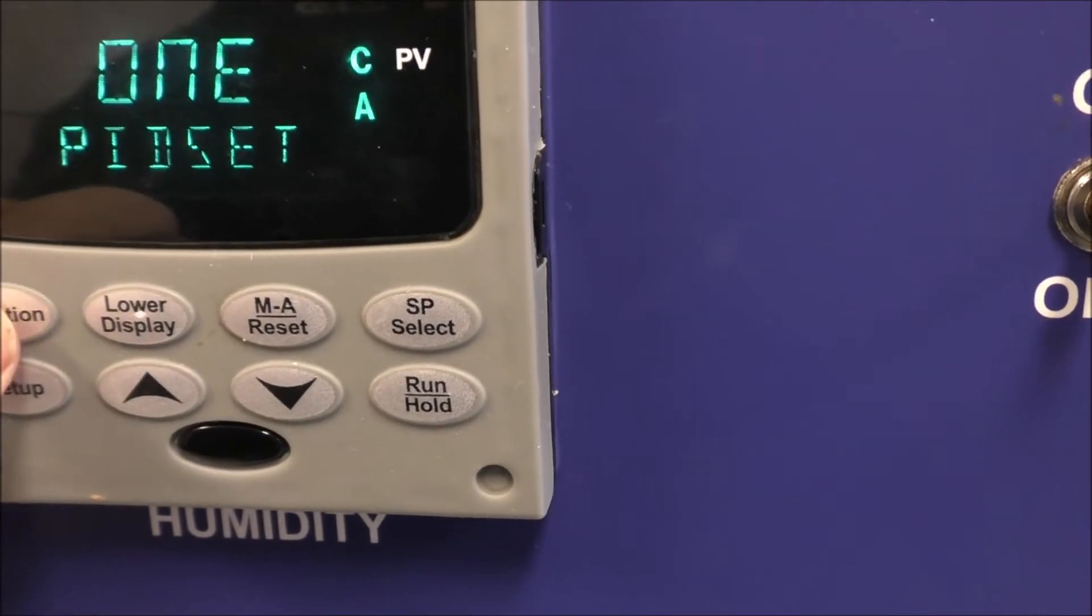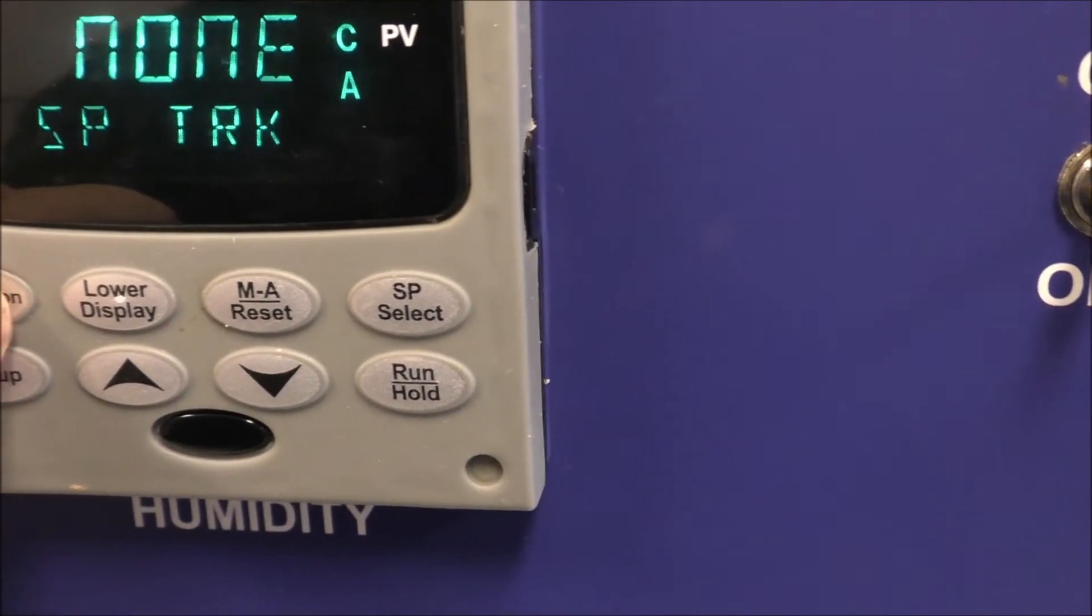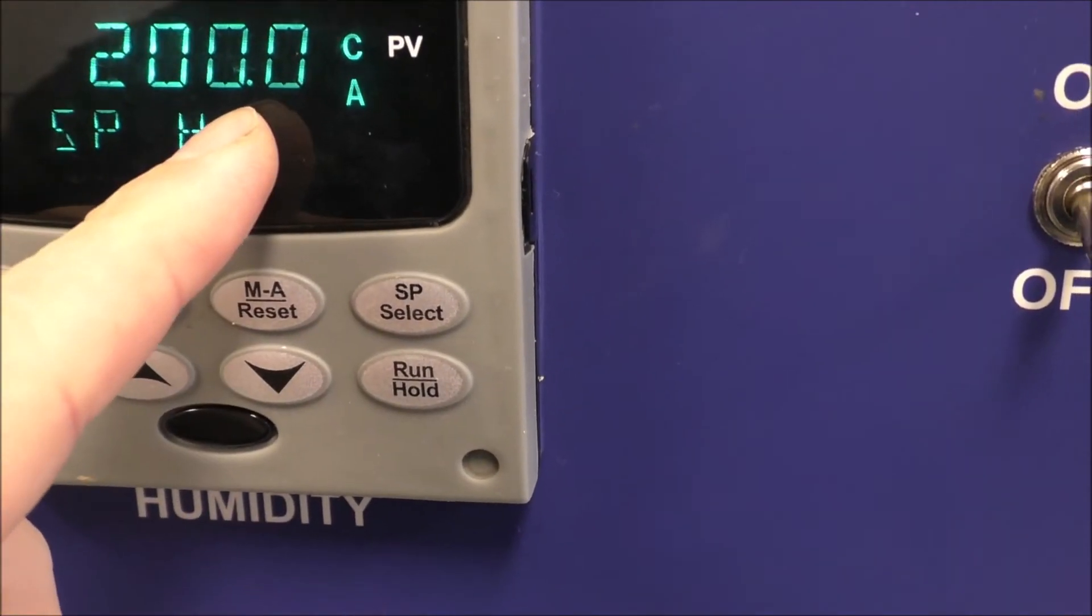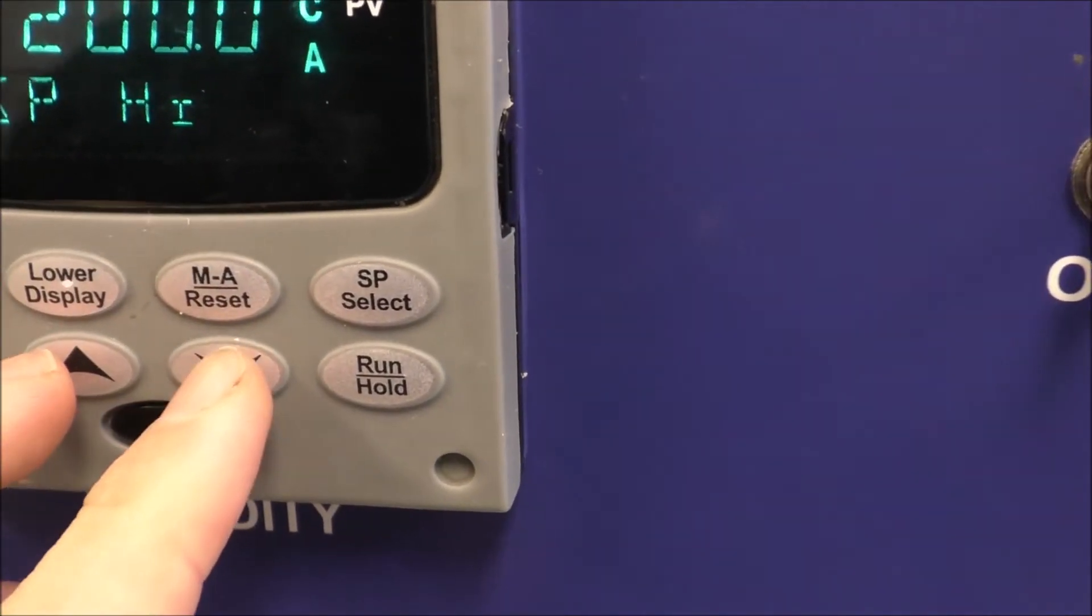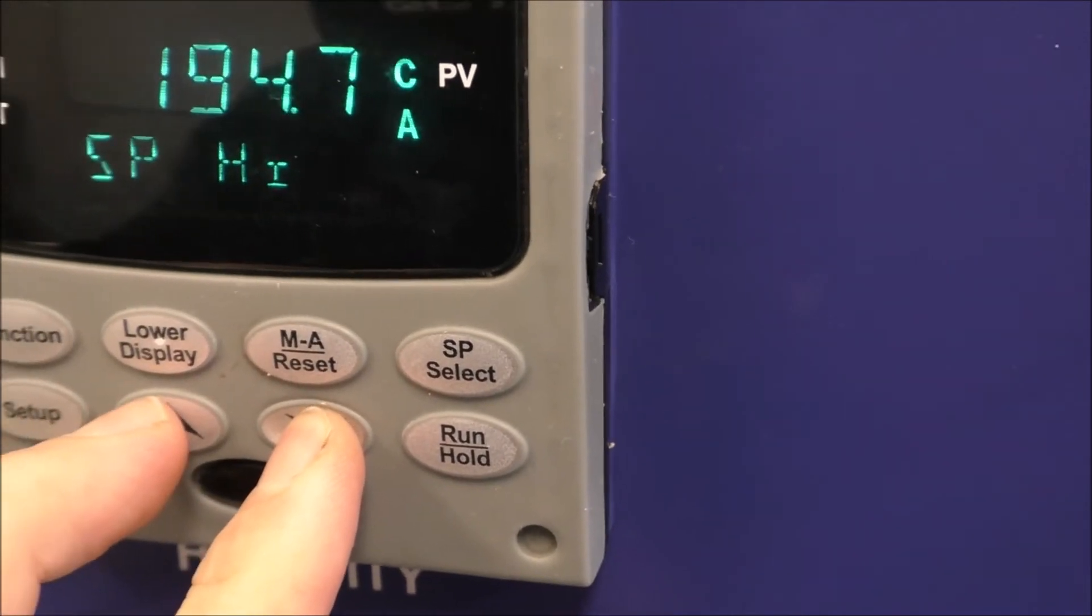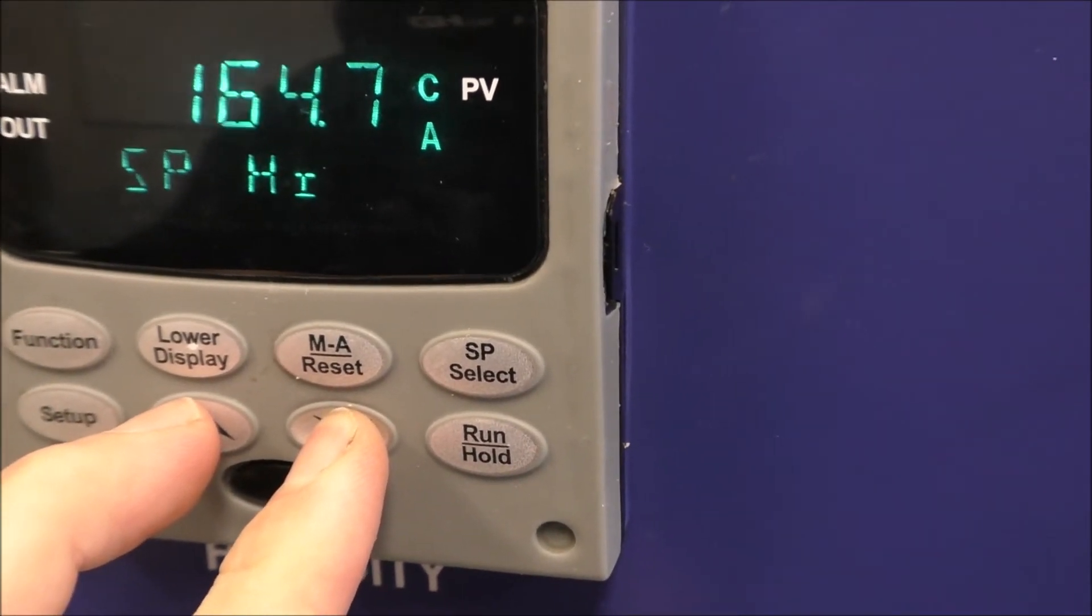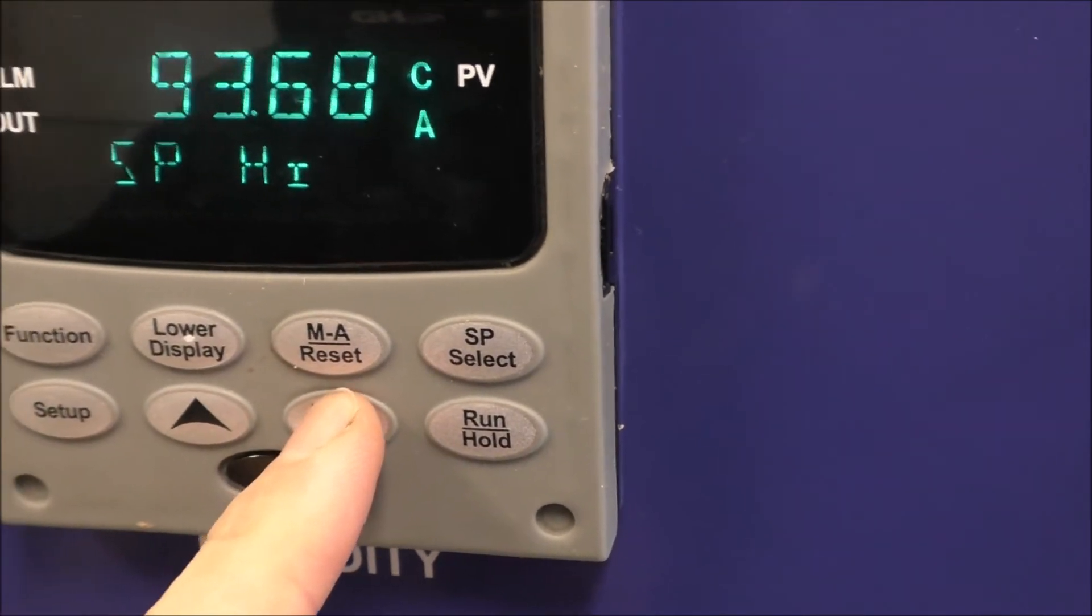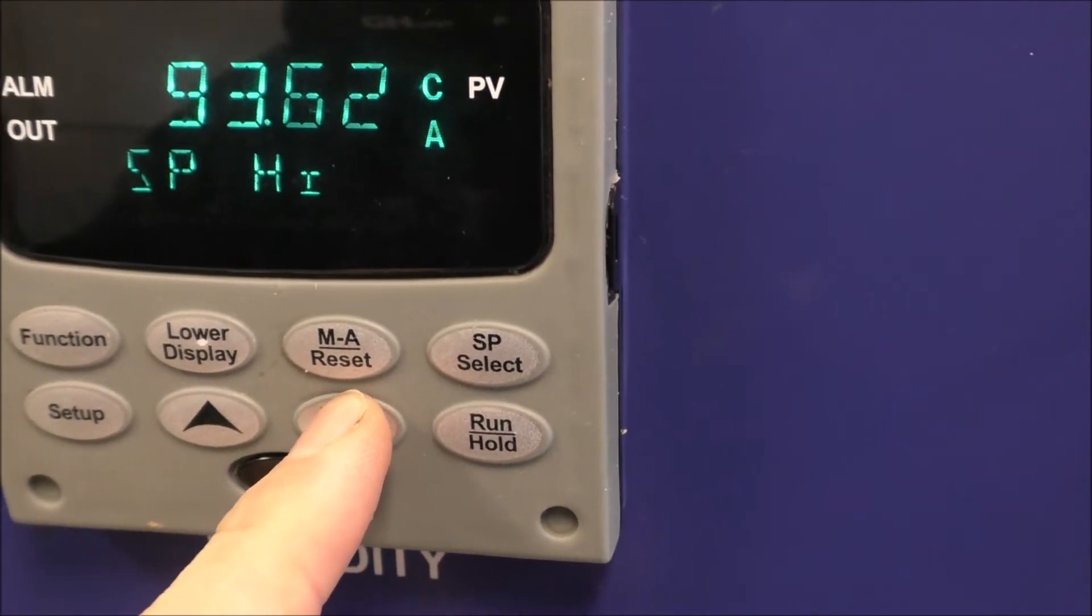Hit function until you see set point high, which under Fahrenheit is 200 degrees. You'll need to lower this to 93.33 for the corresponding Celsius number.